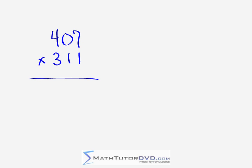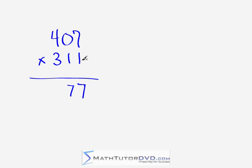Our next problem is 407 times 311. We notice we have a zero, so we expect some nice simplifications. Starting in the right-hand column: seven times one gives seven. Next we expand and do a criss-cross: seven times one is seven plus zero gives simply seven again. Next we do the three-way criss-cross: seven times three is 21, four times one is four, so 21 plus four gives us 25. This third leg contributes nothing, so we put a five and carry a two.